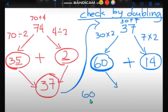Right, so 60 plus 10 plus 4 here equals 74.